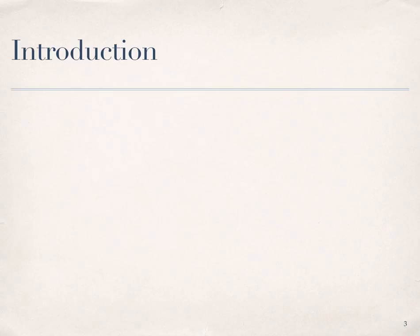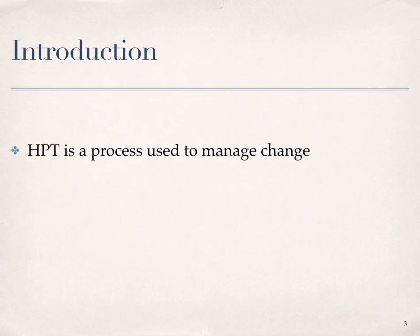Moving into our introduction, you should now have a context for the practice and process of HPT. Focusing on the HPT model, we can say that HPT is a process that is used to manage change. More specifically, it is about managing organizational performance improvement by facilitating change from within the organization. This requires a macro level view of the organization in order to be able to see the big picture.